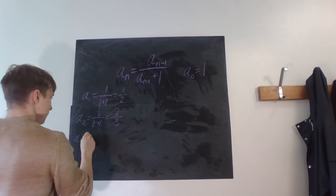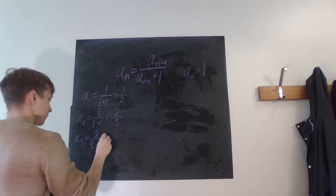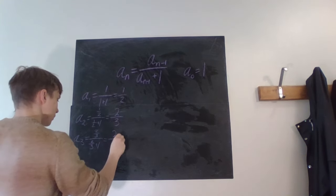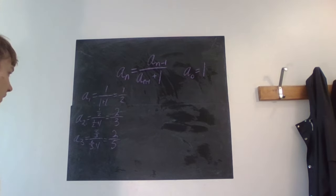And then a_3, what is that? That is two over three, over two over three plus one. Multiply by three everywhere, we get two over five. Interesting pattern we get here.